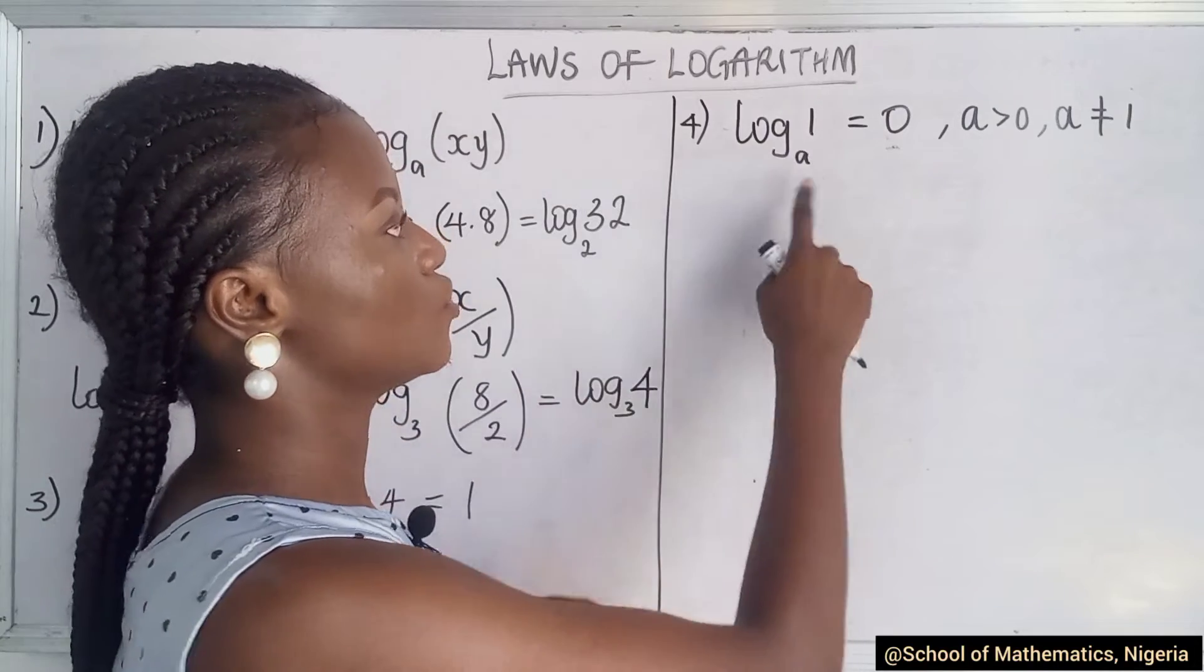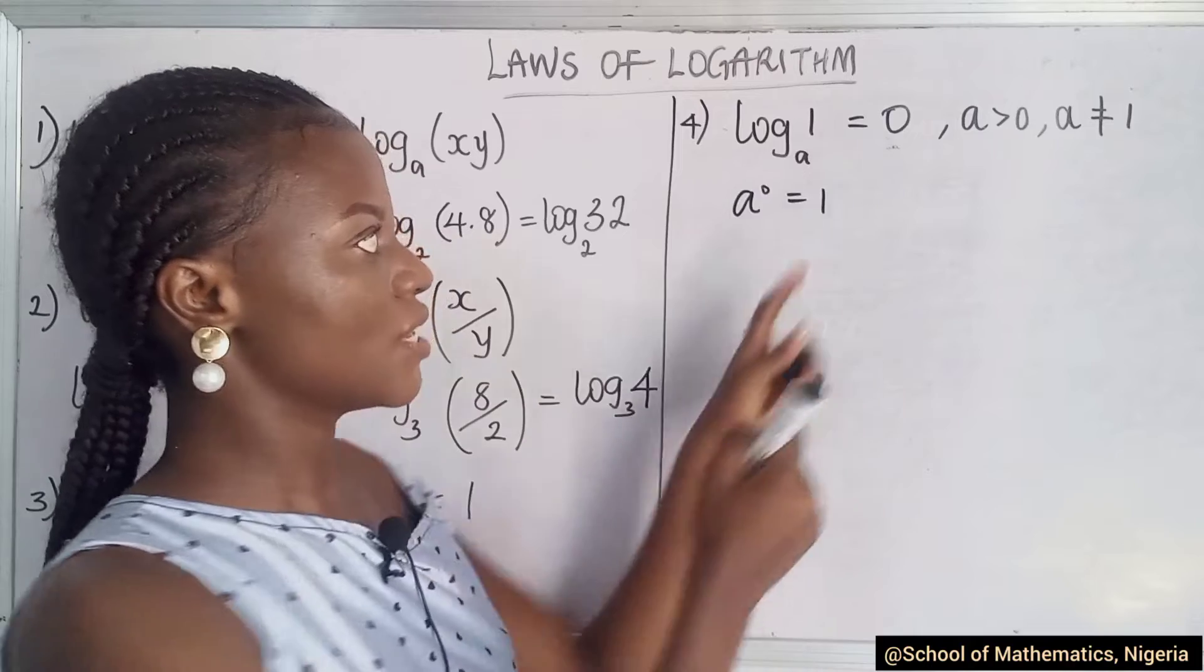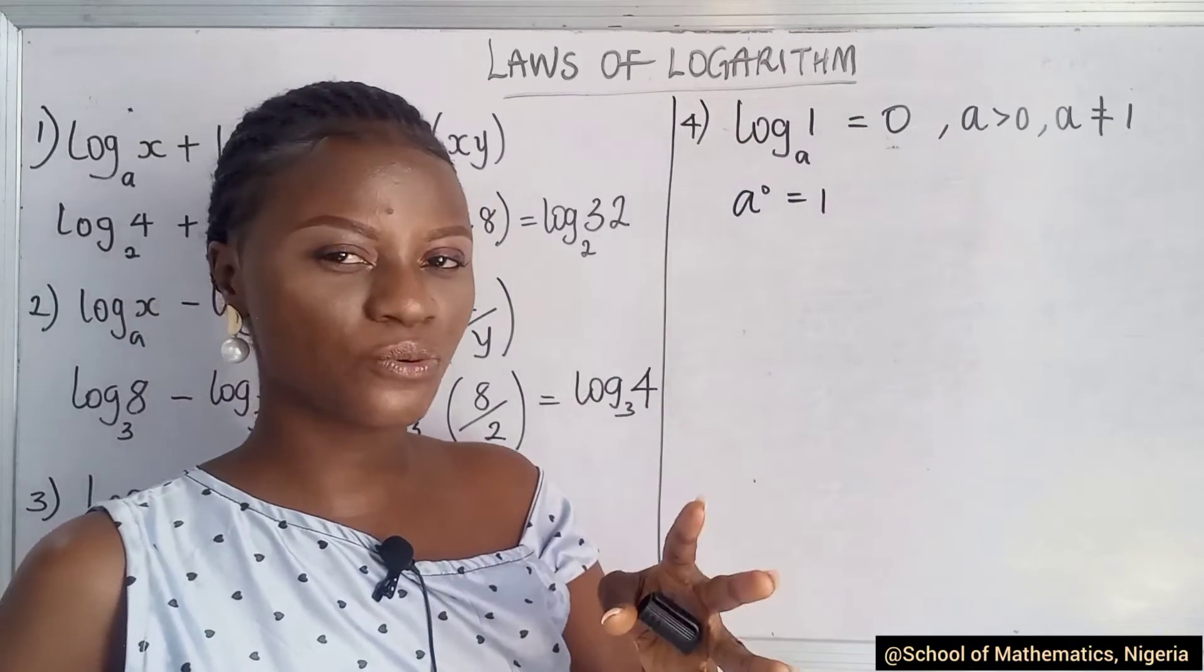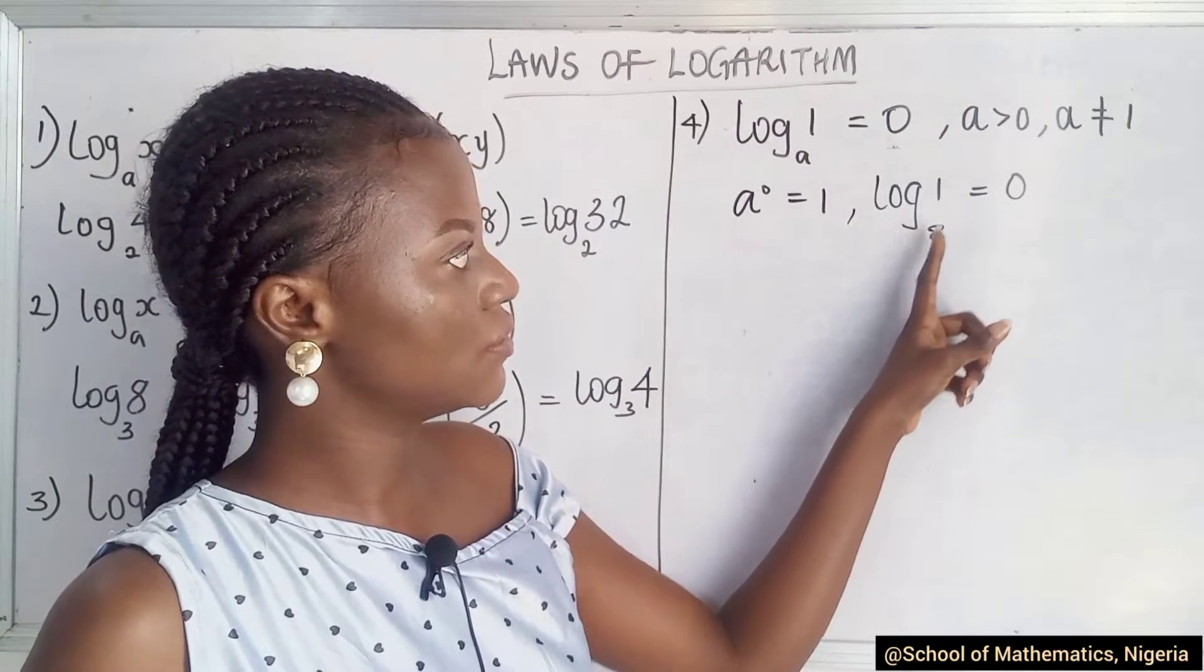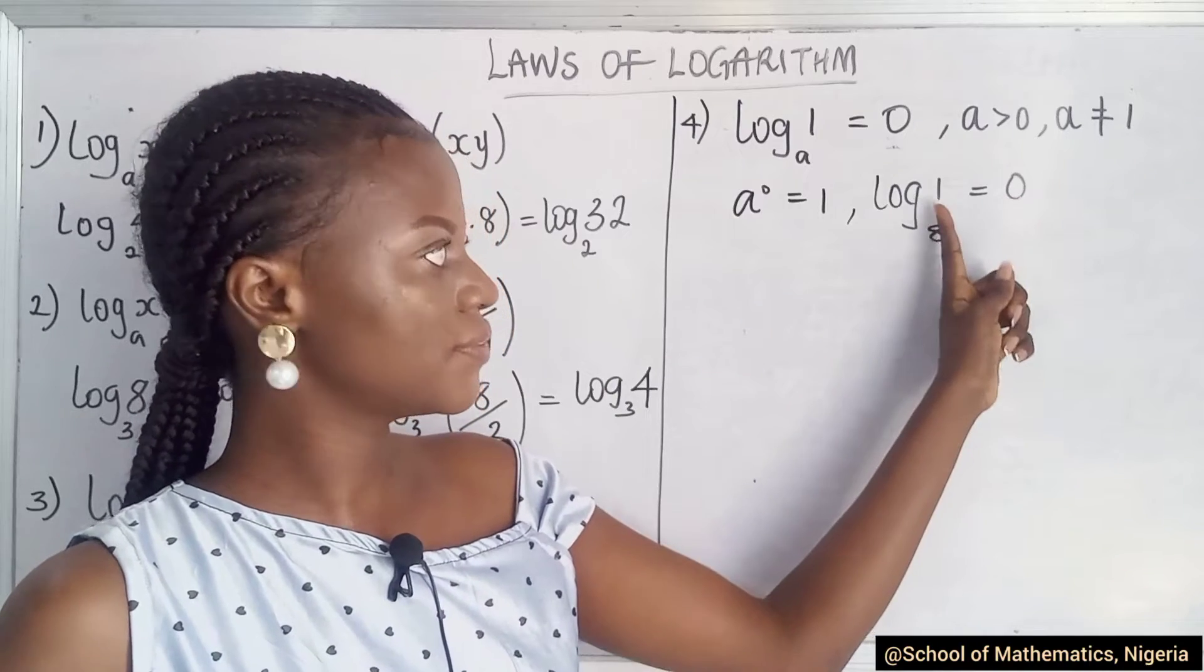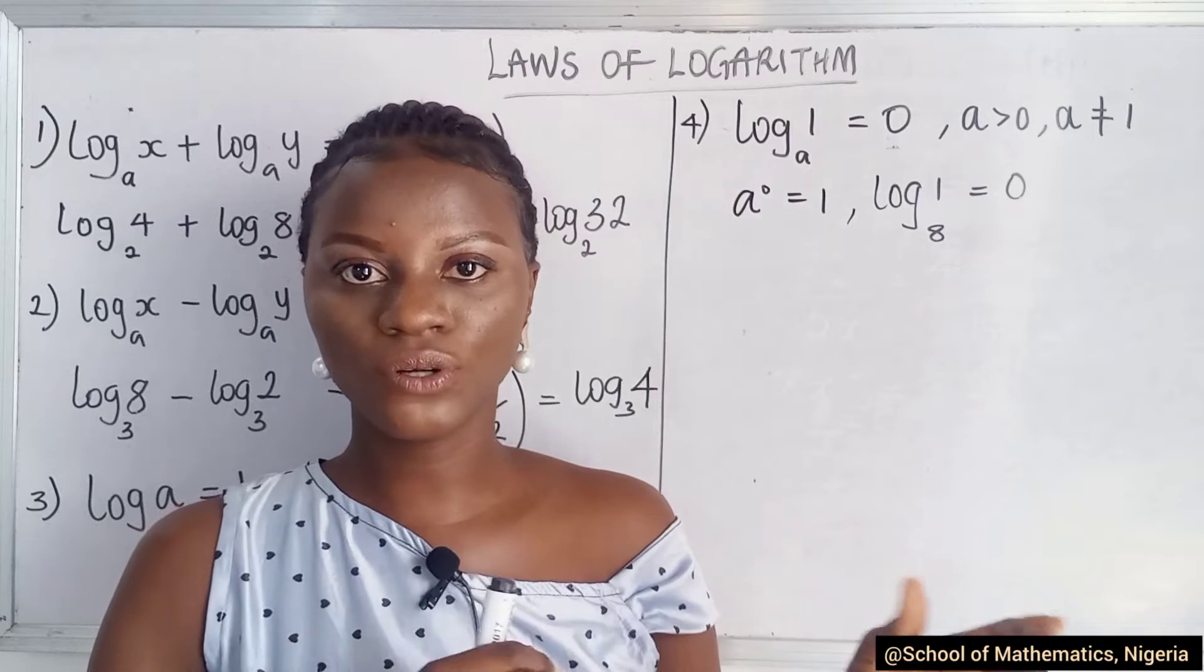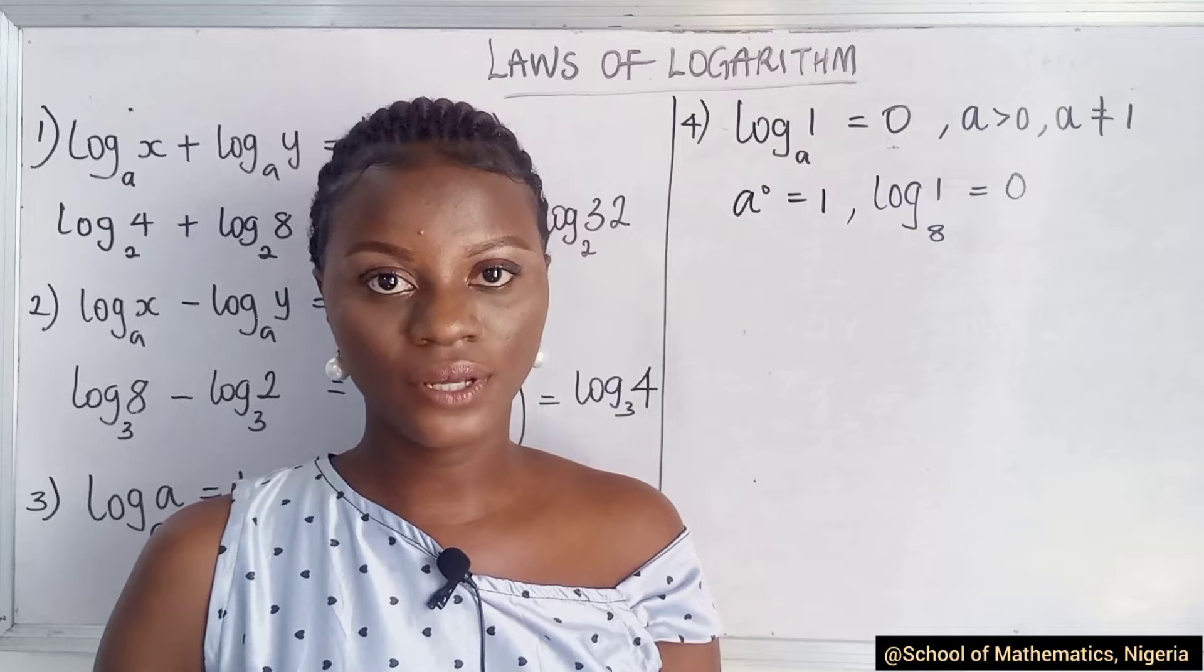So if you see this, you know from our indices, anything raised to the power of 0 is 1, right? That's why when you have the log to a number, to the base of a number of 1, it gives you 0. Let's give an example. So we know that the log to base 8 of 1 gives 0 because 8 raised to the power of 0 definitely gives 1. This rule is trying to let us know that when you have the log to the base of any value, the value has to be greater than 0 and not equal to 1.